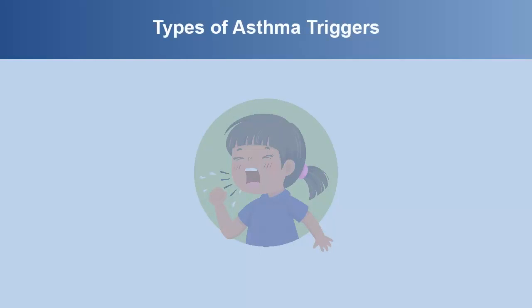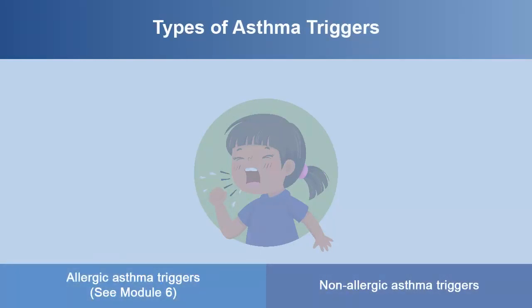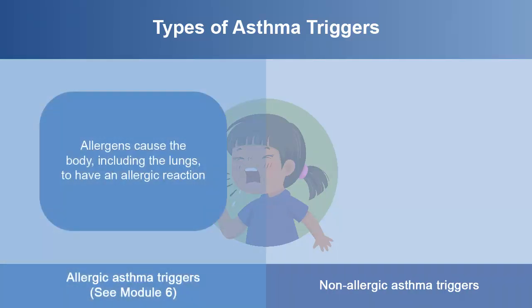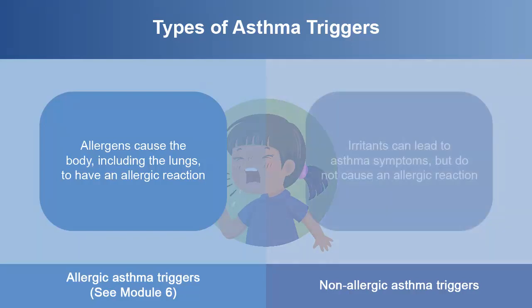It's important for you or your child to know your specific asthma triggers so you can try to avoid them. There are allergic and non-allergic asthma triggers. This module will talk about non-allergic asthma triggers. Please take a few minutes to also watch Module 6, which talks about allergic triggers. Allergens cause the body, including the lungs, to have an allergic reaction. Irritants can lead to asthma symptoms but do not cause an allergic reaction.